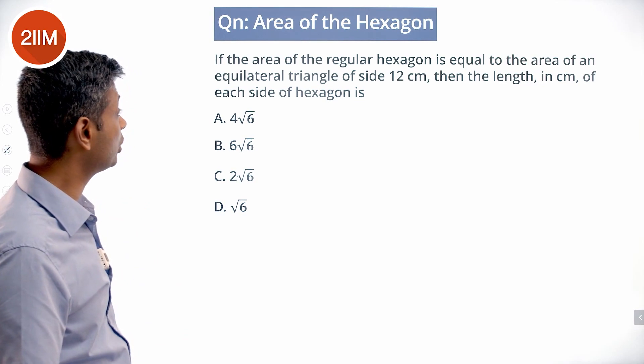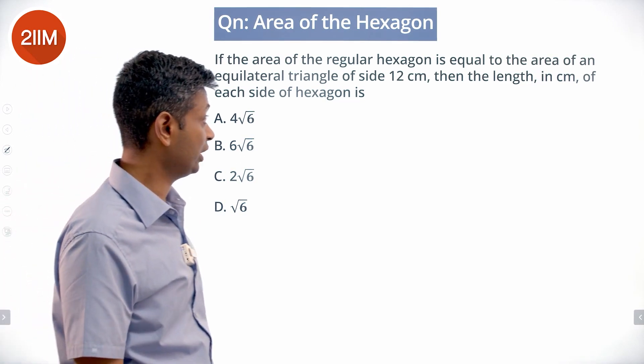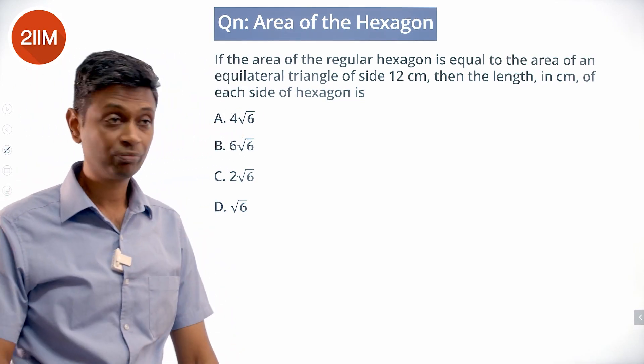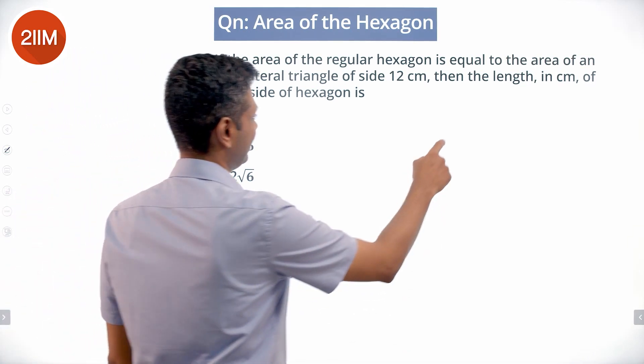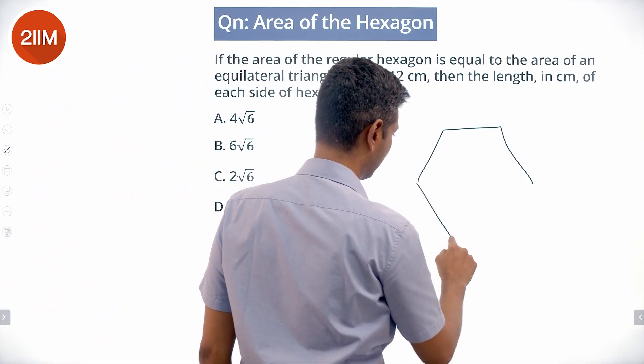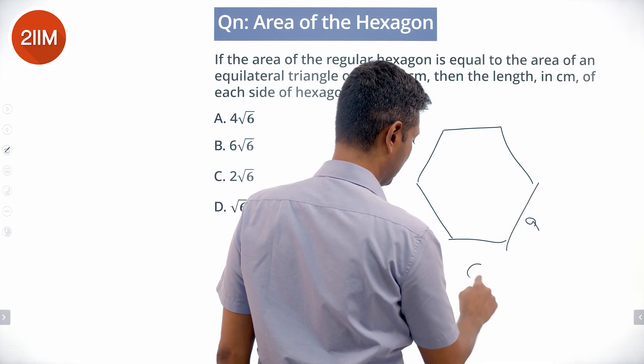The area of a regular hexagon is equal to the area of an equilateral triangle of side 12 centimeters. Find the length in centimeters of each side of the hexagon. So, a regular hexagon of side a has area